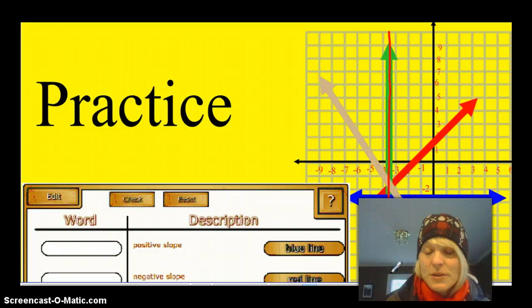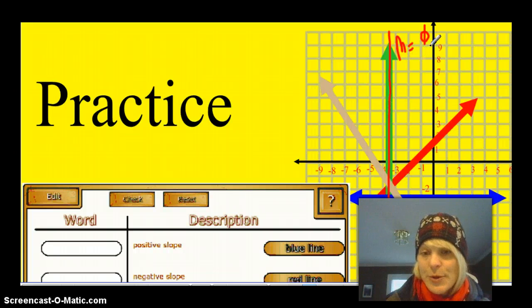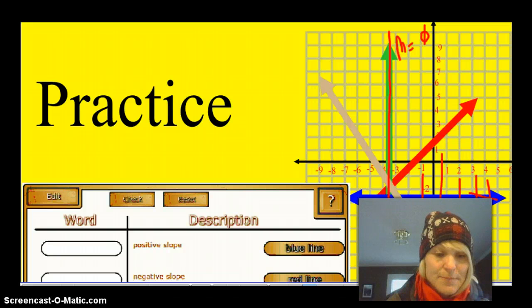And then we know from our functions work already that a vertical line will not pass the vertical line test. Therefore, it's not a function. So therefore, it can't have a slope. We say the slope is undefined. We put a zero with a line through it. So vertical lines, although they're a line, they're not a function. Therefore, they have no slope. Horizontal lines don't rise, but they run, and it is a function. It passes the vertical line test. Therefore, it has a slope of zero.